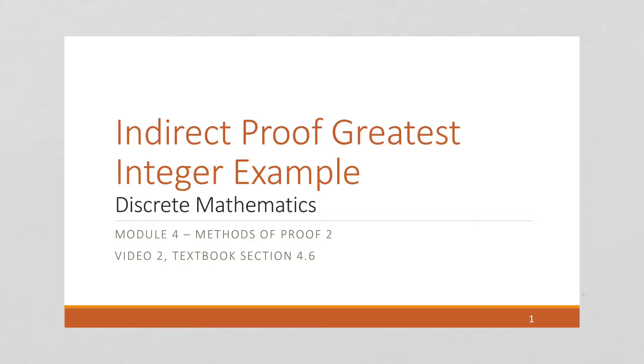Okay, in this video we're going to do another example of a proof by contradiction, which is a type of indirect proof.